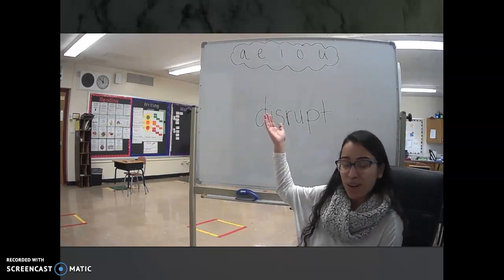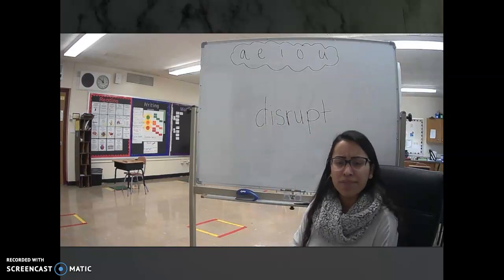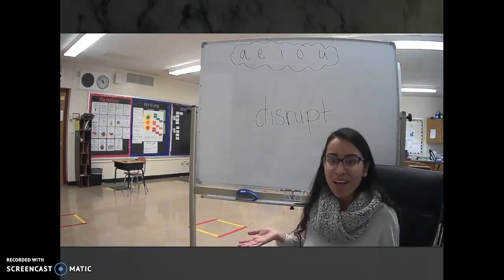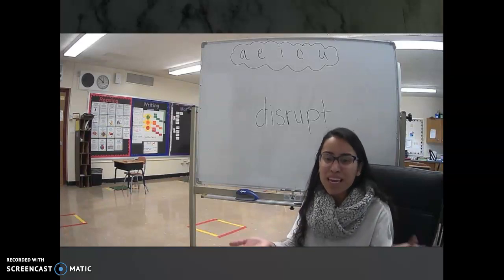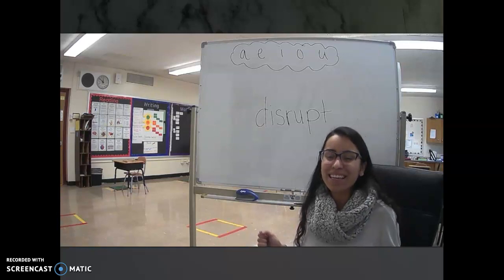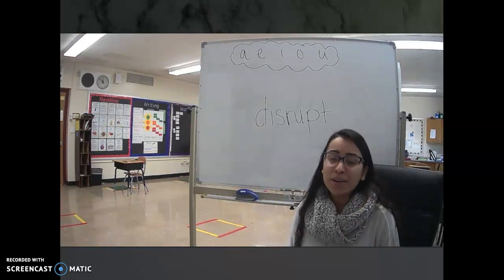Now, one of the things that we want to do is make sure that we're looking at our vowels. I'm going to go first. A-E-I-O-U. Those are the vowels. Can you sing it with me? A-E-I-O-U. One more time. A-E-I-O-U. Awesome job.